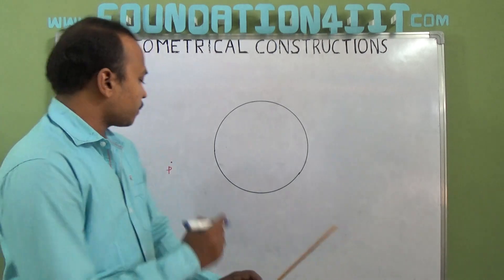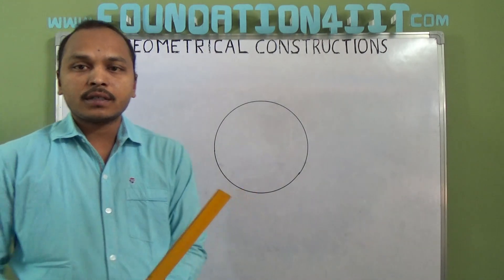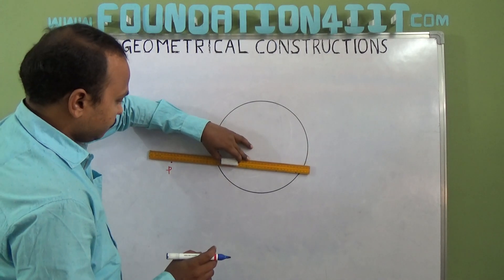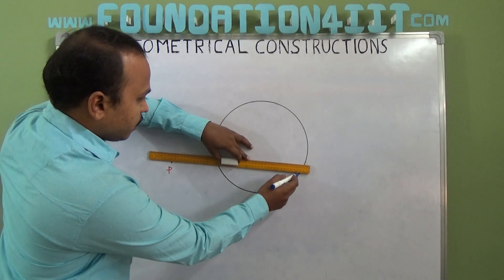First step is from the P, you just draw a secant. That means it touches two points of the circle, just draw a secant.